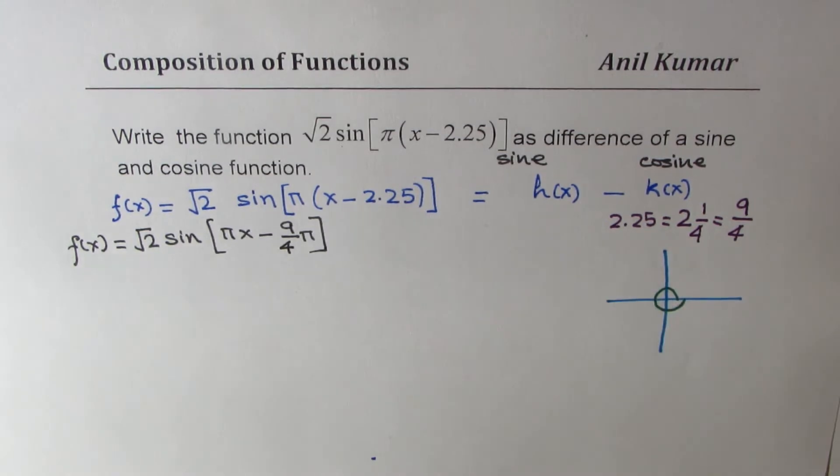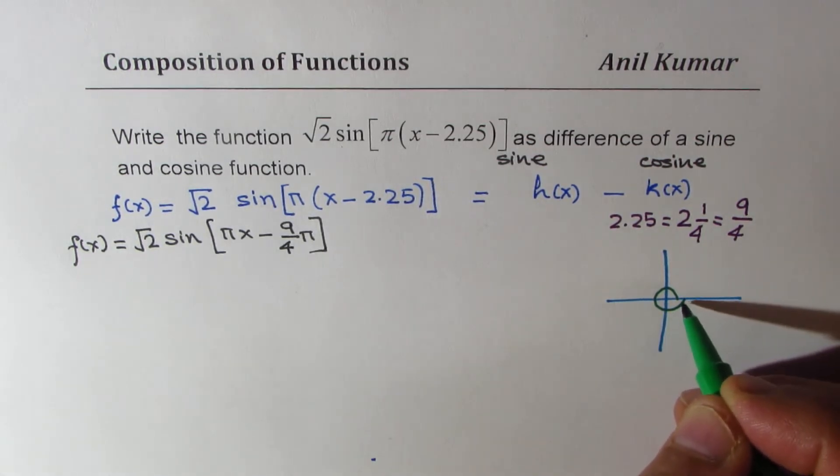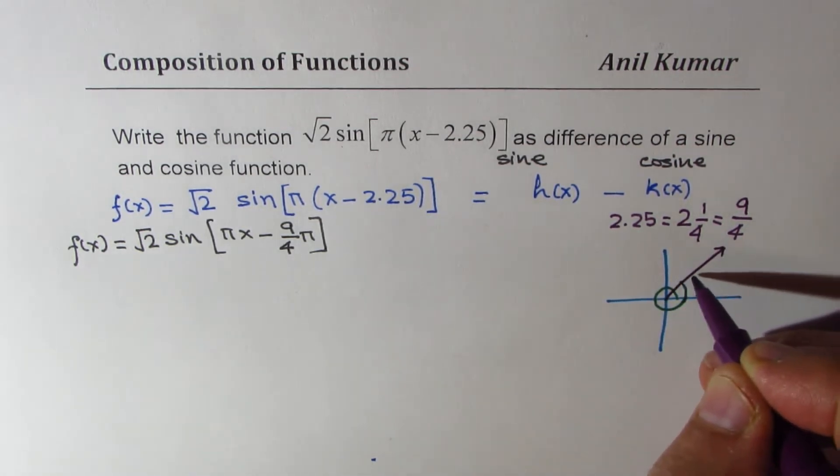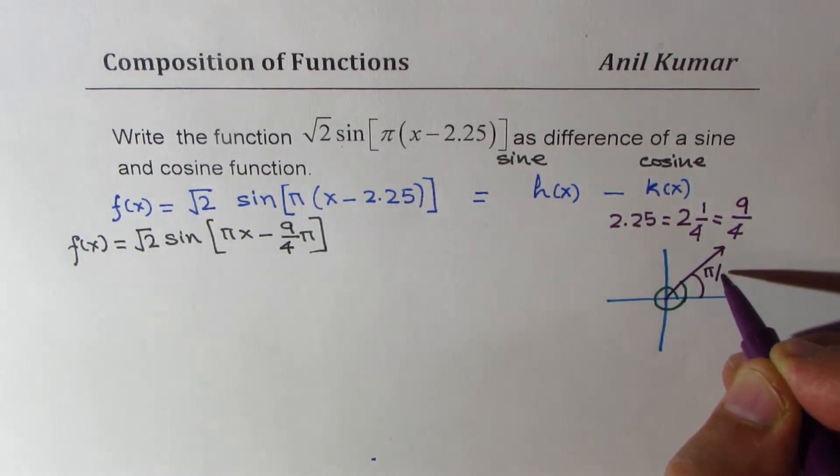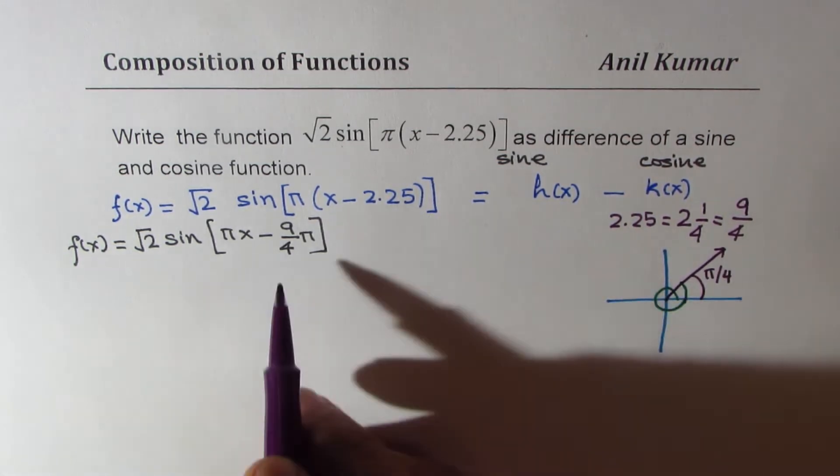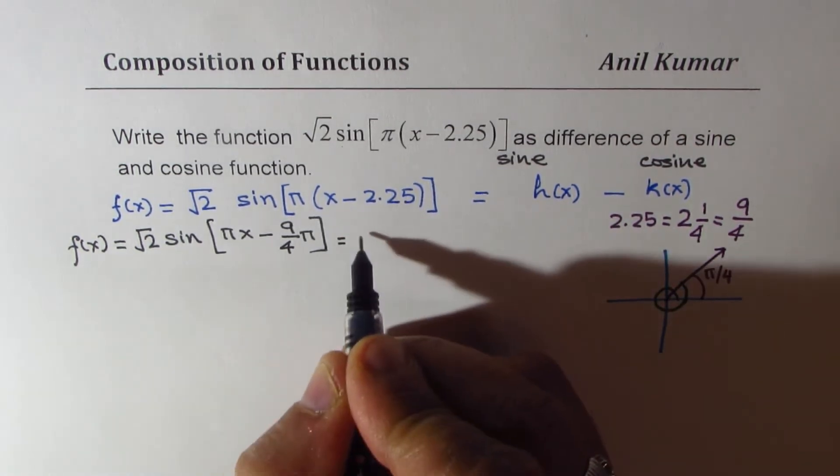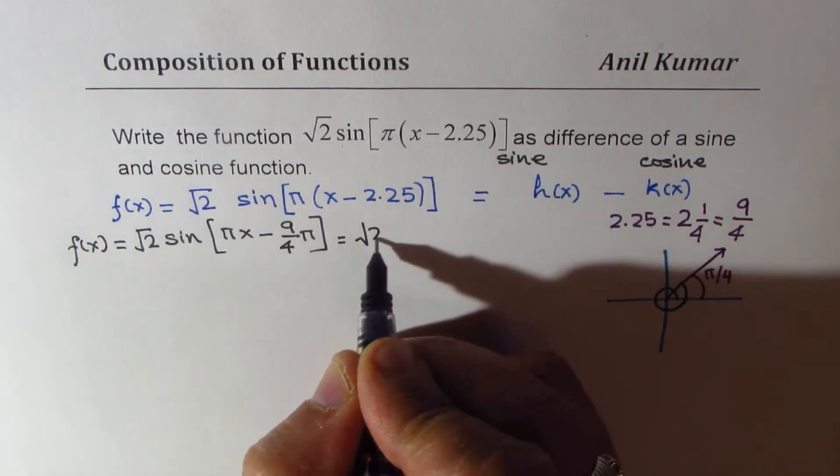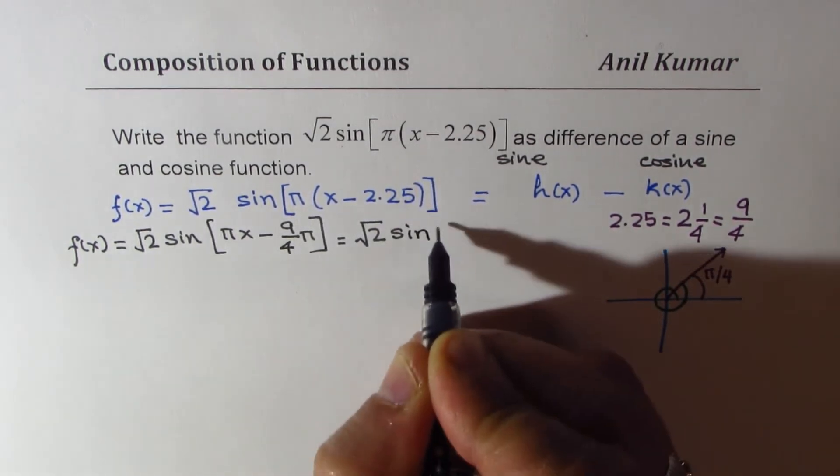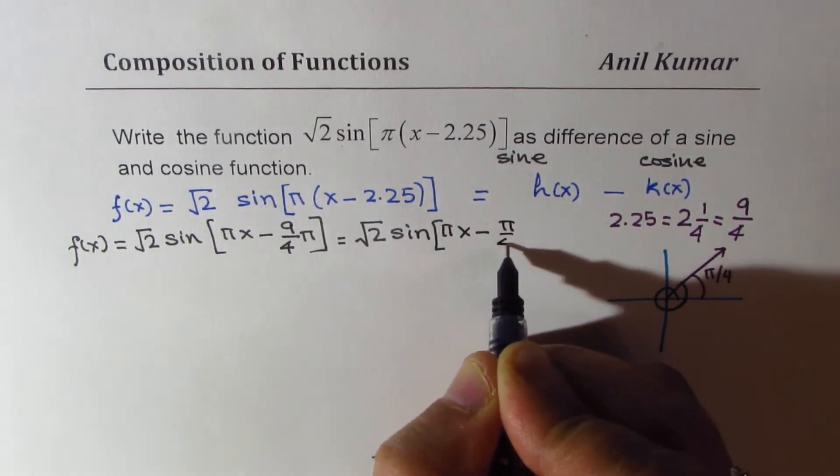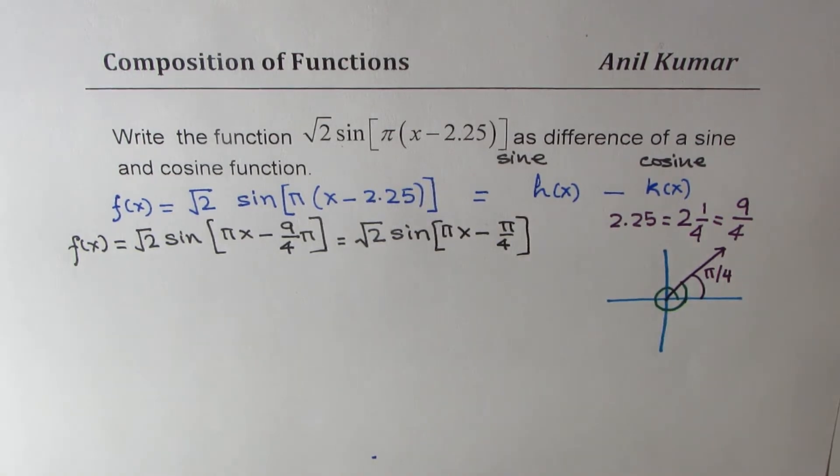So when I write 9 over 4 pi, it means this much is 8 over 4 pi and then one more, right? Do you see? So when you go like that, you come to an acute angle of pi by 4. So this is basically equal to pi by 4, correct? So I could write this as equal to square root of 2 sine of pi x minus pi by 4, right? Sine is a periodic function, so it makes sense.